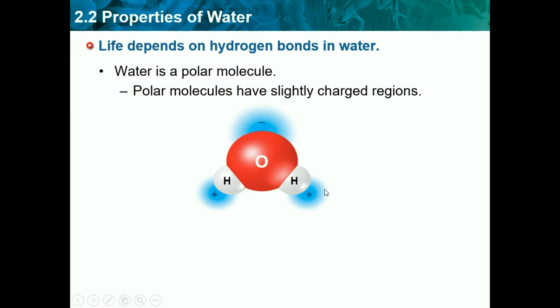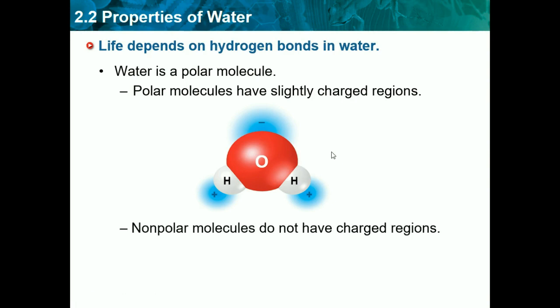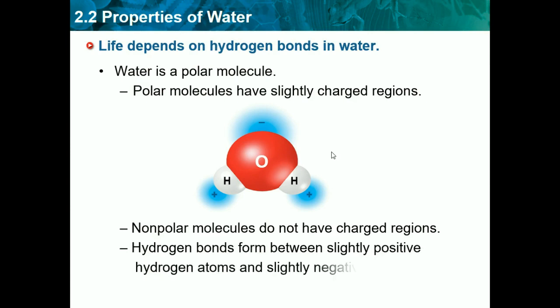These hydrogen bonds in water help life extremely. Non-polar molecules do not have charged regions, so they will be the same throughout. Hydrogen bonds form between slightly positive hydrogen atoms and slightly negative atoms, so it's polar. Hydrogen bonding is a weak bond compared to the last two we learned, which are covalent and ionic bonding.